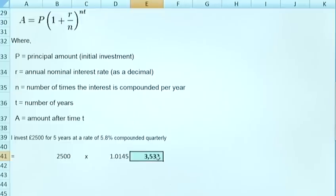So within this formula at the end we have to take into account the N multiplied by T. So the number of times interest is compounded times by the number of years. So in the formula we do 4 to the power of 4 times by 5 which gets us 3,532.